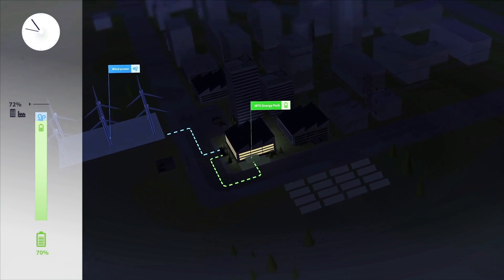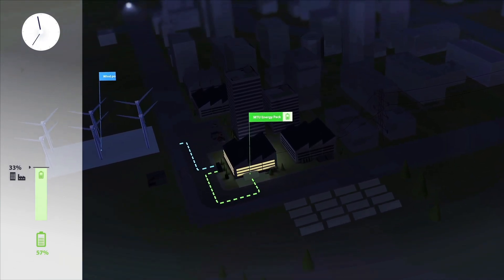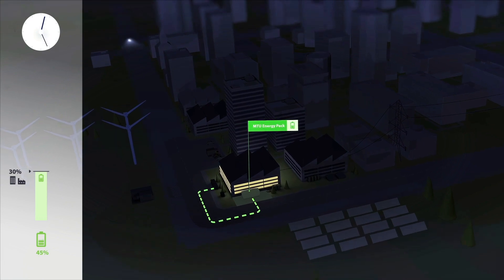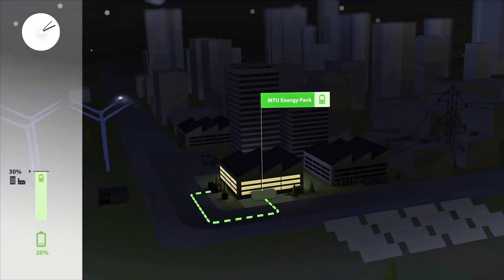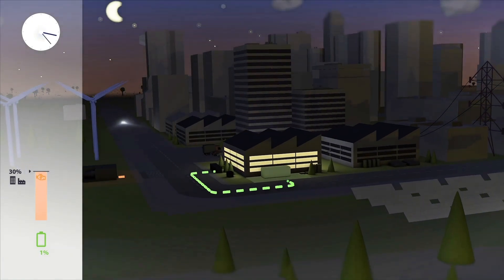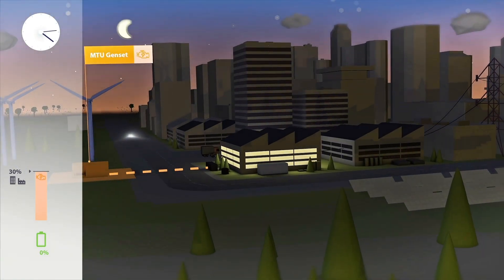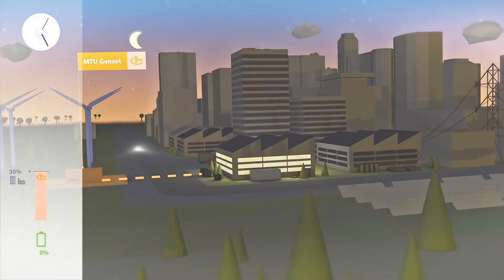Late in the evening and overnight, less energy is obtained from renewable sources, but much less is also consumed in the factory. The demand can now be covered completely by the battery. Only when it is discharged does the generator provide electricity until the sun rises again.